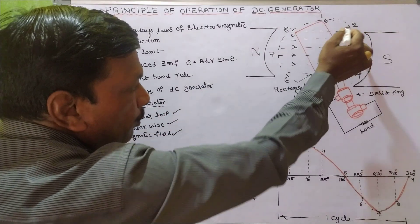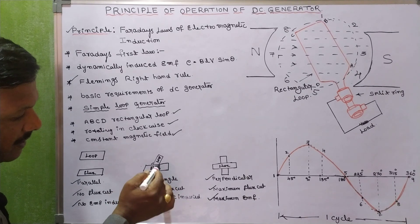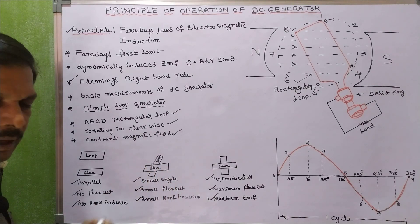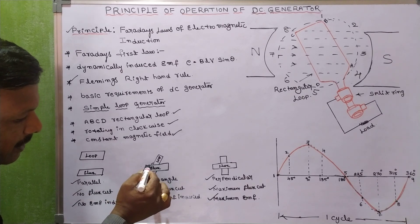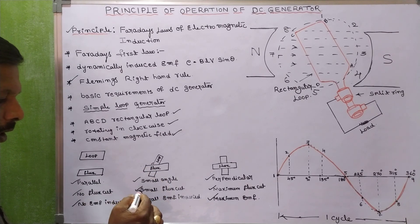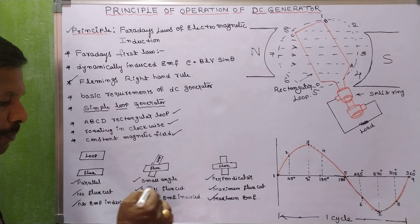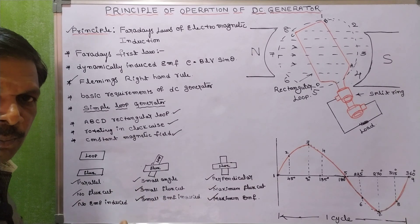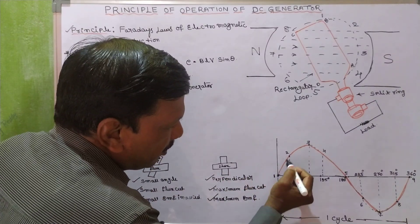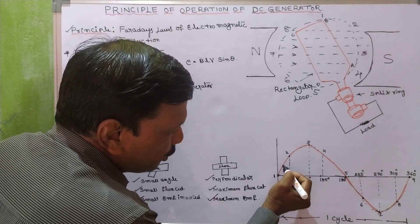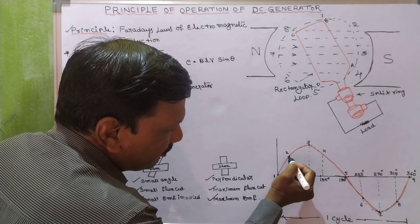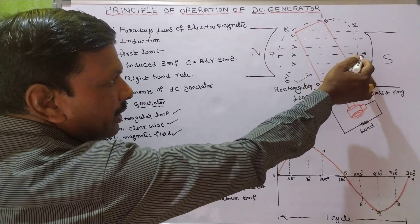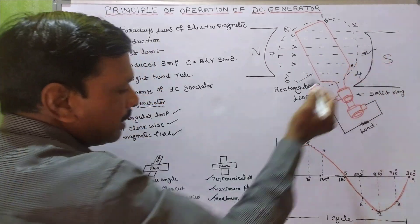At position number two, the flux and loop make some angle. When they make some angle, a small amount of flux cutting takes place and the induced EMF is small. So from position one to two, the induced EMF increases from zero to a small value.